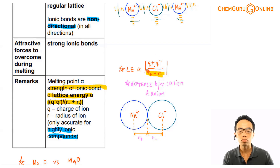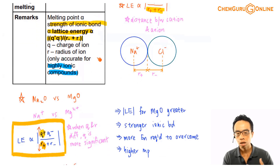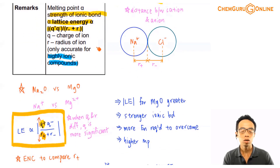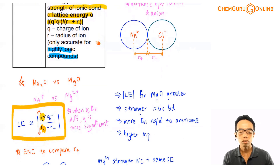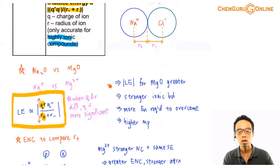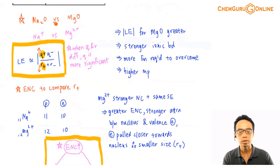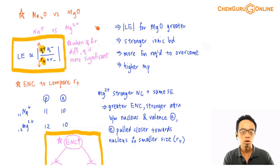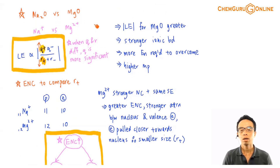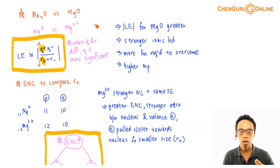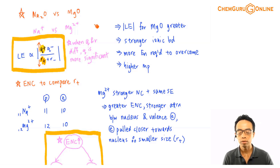Usually we don't need to do calculations involving lattice energy — most of the time it involves a comparison. So if I consider this comparison involving sodium oxide and magnesium oxide, the difference is between Na⁺ and Mg²⁺. We don't need to look at the O²⁻ ions. The concept we use to compare the melting point for these two ionic compounds is lattice energy.